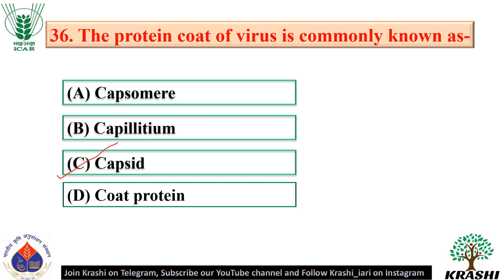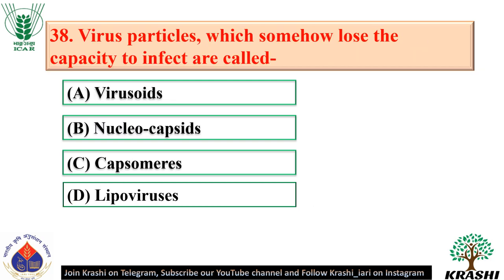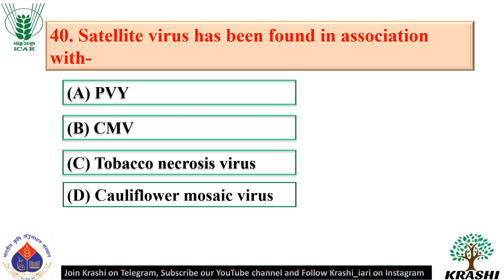Question number 37: Capsid consists of many subunits referred to as capsomeres. Question number 38: Virus particles which somehow lose the capacity to infect are called nucleocapsids. Question number 39: Envelope-containing viruses are known as lipoviruses — option D. Question number 40: Satellite virus has been found in association with tobacco necrosis virus — option C; Cassinus discovered it in 1962.